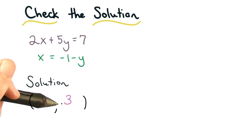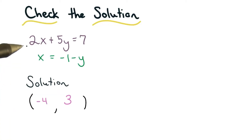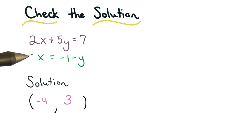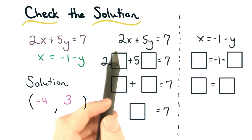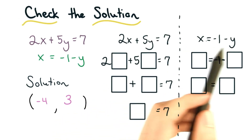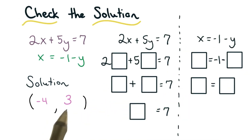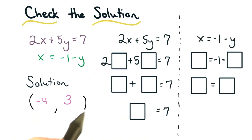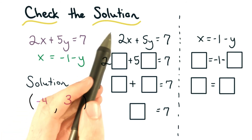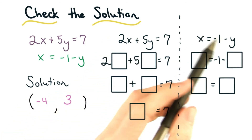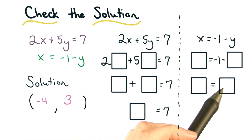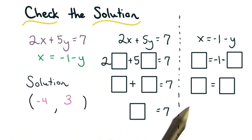We know negative 4, 3 is the solution to our system of equations. Well, we can also check it to be sure. Here are the two original equations, and here was our solution. We want to check our solution in each equation and make sure that we wind up with true statements at the end.